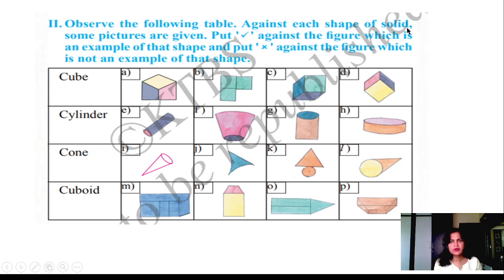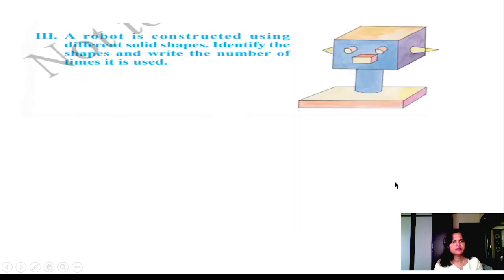Observe the following table. Against each shape of the solid, some pictures are given. Put a tick against the figure which is an example of that shape, and put a cross against the figure which is not an example of that shape. This is not a cube. This is a cube. This is a cube. Cylindrical, yes it is. This is not. This is cylindrical, this is cylindrical. Cone, yes it is. This is not cone. This is not cone. This is cone.